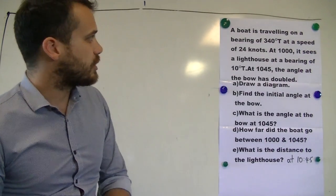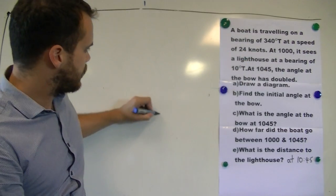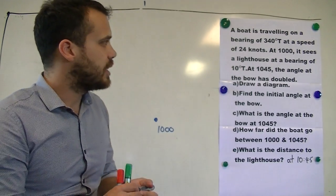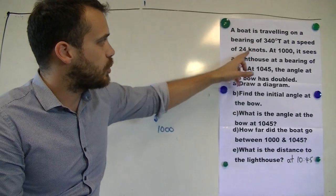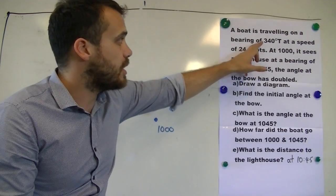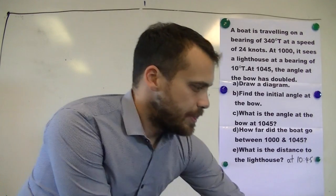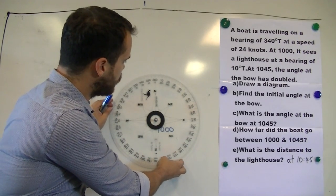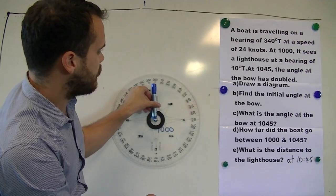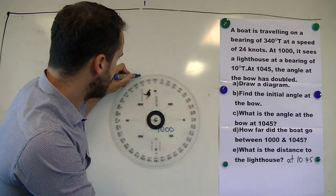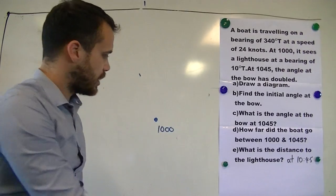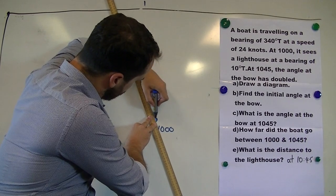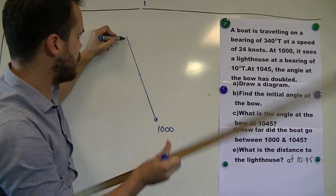Okay, first of all we're going to draw our diagram. Let's start with our boat at 10 o'clock. Here's our boat at 10 o'clock and it's traveling at a speed of 24 knots on a bearing of 340 degrees true. You're going to find this much easier if you've got a protractor. So we've got our north line up here and it's traveling at a bearing of 340 degrees true. So it's traveling along this blue line here.